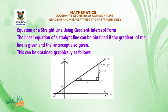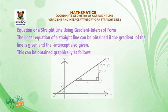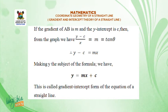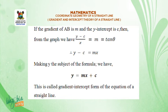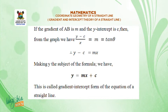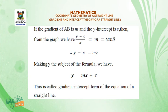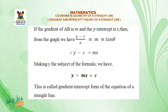If the gradient of AB is m and the y-intercept is c, then from the graph we have (y - c) / x = m = tan θ. Therefore y - c = mx, and making y the subject of the formula: y = mx + c. This is called the gradient-intercept form of the equation of a straight line.